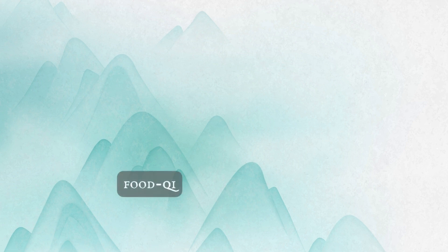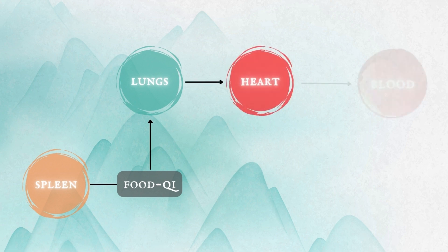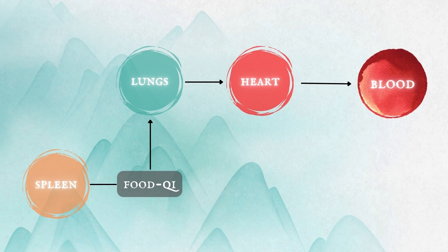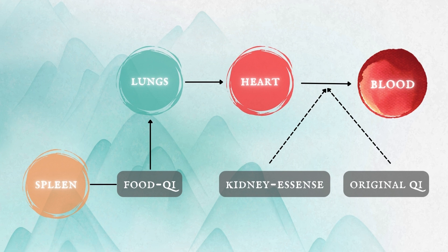Blood is derived mostly from the food qi produced by the spleen. The spleen sends food qi upwards to the lungs, and through the pushing action of lung qi, this is sent to the heart, where it is transformed into blood. The transformation of food qi into blood is aided by the original qi. In addition, essence stored in the kidney generates bone marrow, and marrow in turn is transformed into blood.